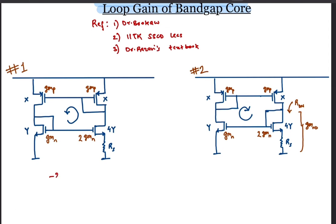The gain is thus minus 2GMN times the load 1 by GMP divided by the factor due to degeneration which is 1 plus 2GMN RS.